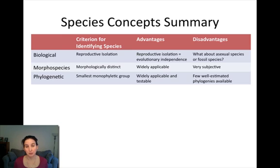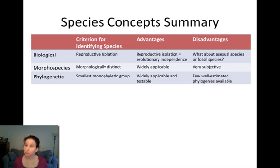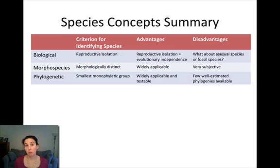The second species concept is the morphospecies concept. If you have two populations of organisms and they look different from one another, then we consider them separate species. What's the problem with this? How much morphological difference is necessary in order to call two populations of organisms separate species? It's a very subjective species concept.